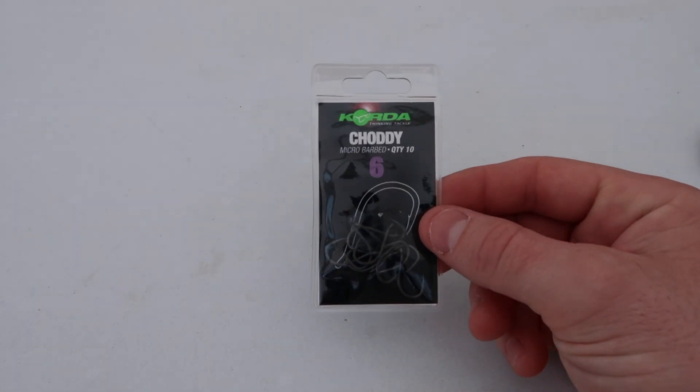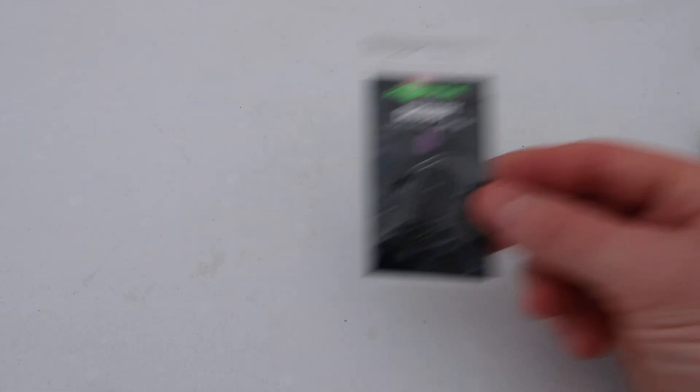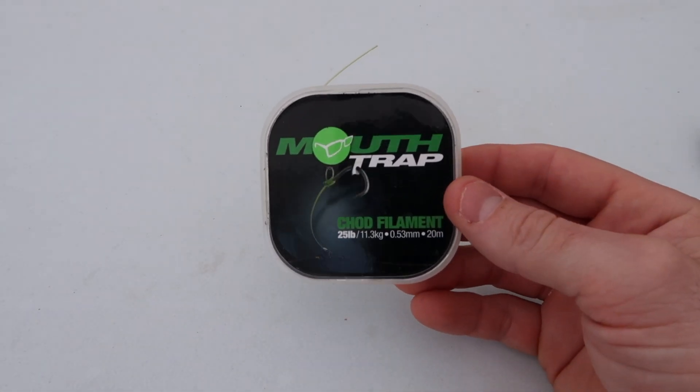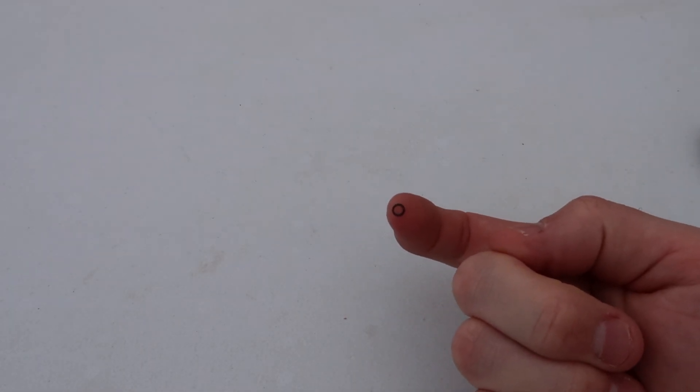Now the components needed are a choddy hook with an out-turned eye, a stiff monofilament - this chod filament is perfect for that - and a small rig ring.